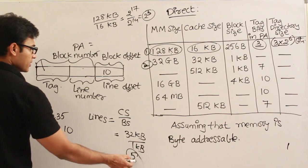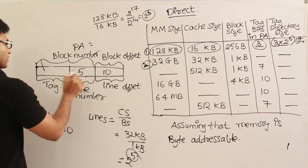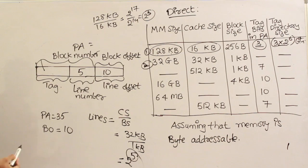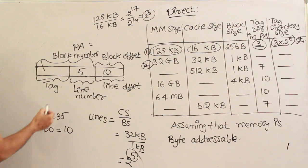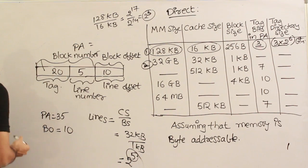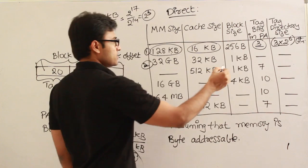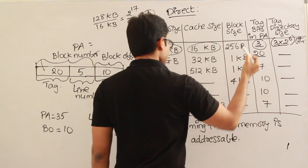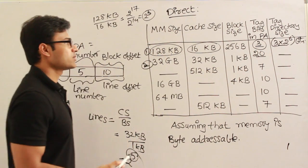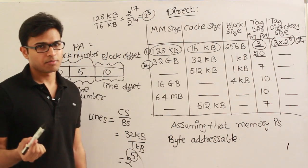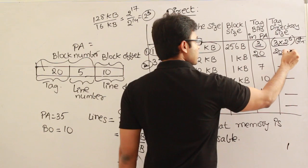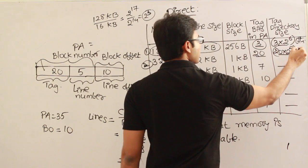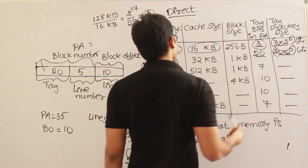So 5 bits are required for the line number. Out of 35 bits total, 15 bits are used, leaving 20 bits for the tag. There are 2^5 lines, each needing 20 bits per tag, so the total tag directory size is 20 × 2^5 bits.